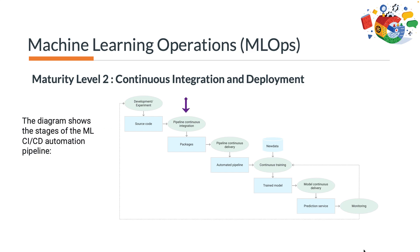Stage 2 is pipeline continuous integration: you build source code and run various tests. The output of this stage are pipeline components — for example, packages, executables, and artifacts — to be deployed in a later stage.